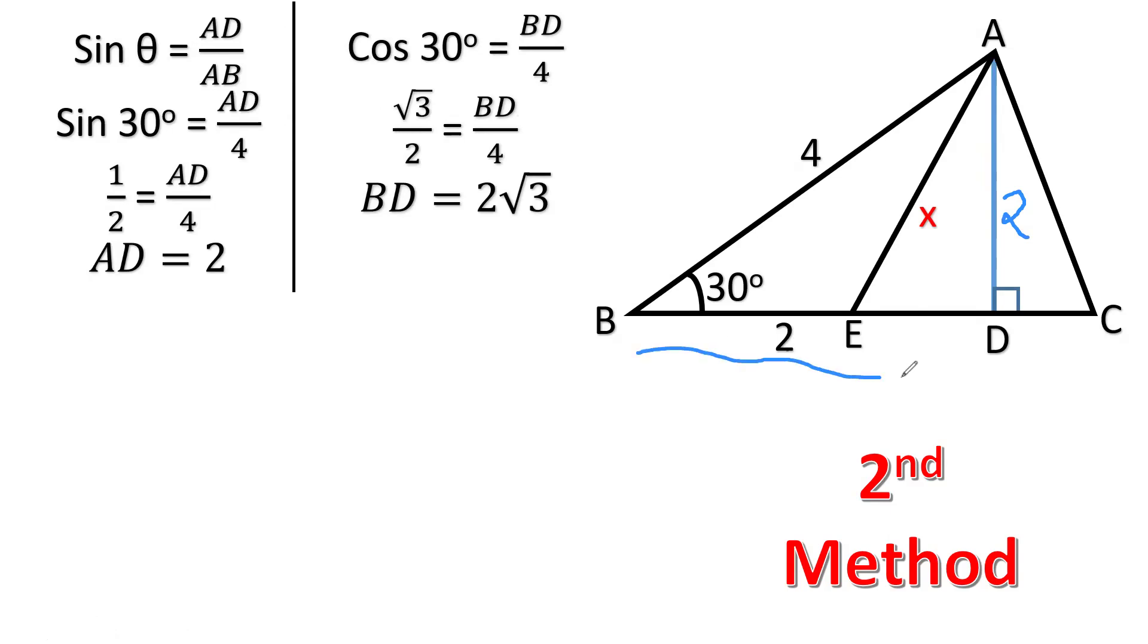If BD is 2 root 3, from here to here, DE will be 2 root 3 minus 2.